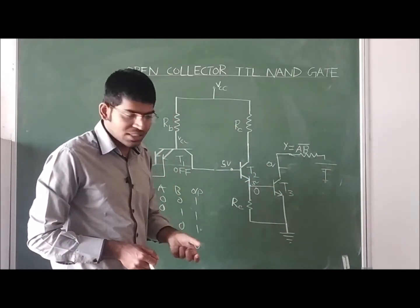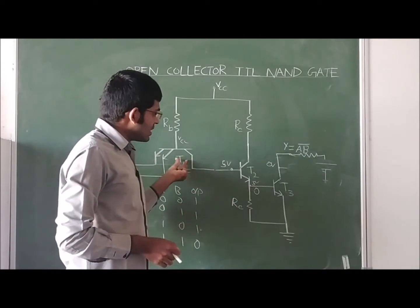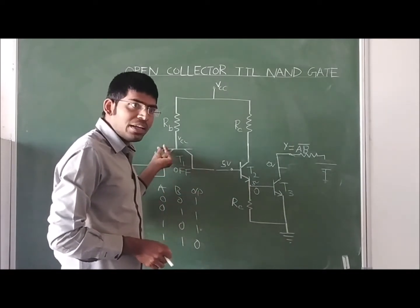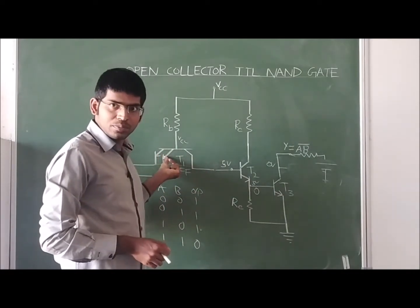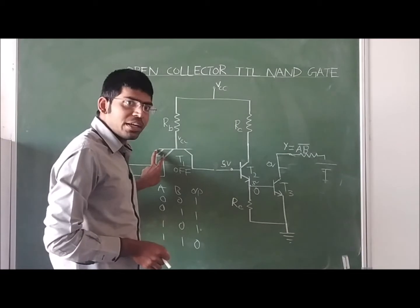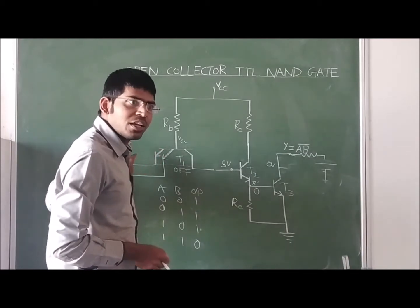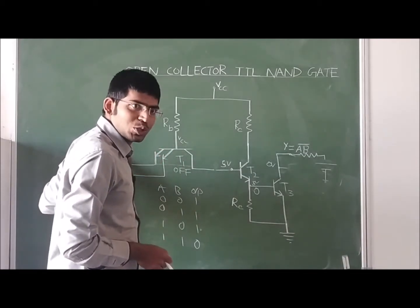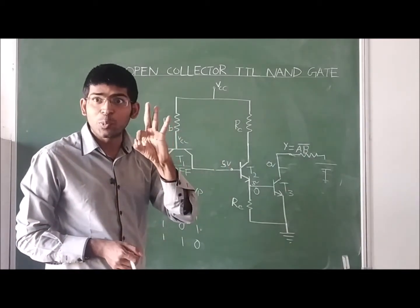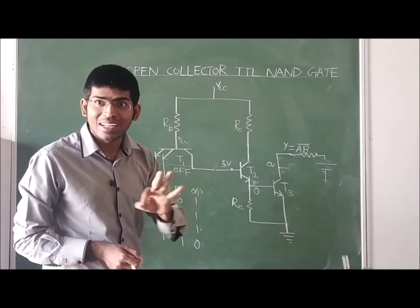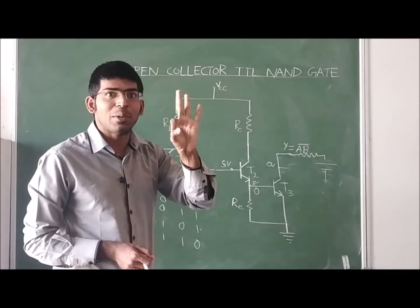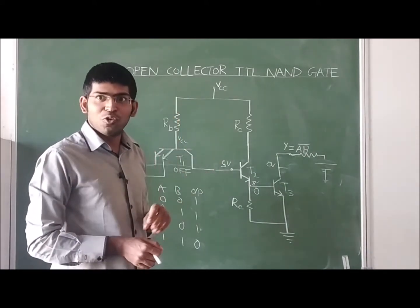Transistor T1 has multi emitters. To these two emitters we are giving two inputs. If you want to design a three input NAND gate, how many emitters do you have to use? Three emitters.